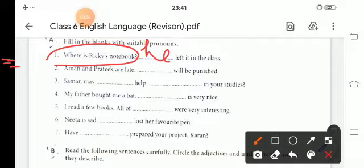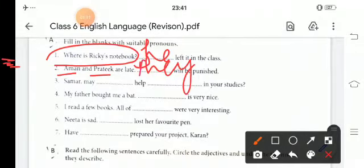Then again, the next sentence is, Aman and Pratik are late. Dash will be punished. So, here we are talking about two persons. The sentence will be they. They will be punished.